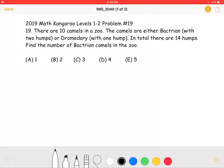This is the 2019 Math Kangaroo levels 1-2 problem number 19. There are 10 camels in a zoo. The camels are either Bactrian with two humps or dromedary with one hump. In total there are 14 humps. Find the number of Bactrian camels in the zoo.